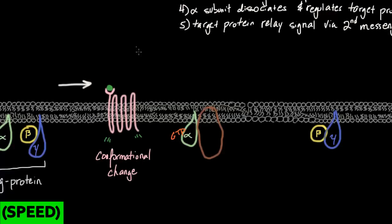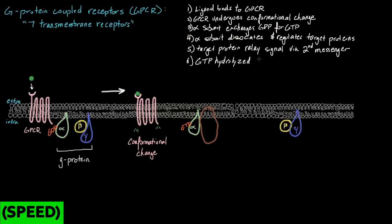Now, how can we actually make this thing go back to normal? Well, step six is that our GTP is hydrolyzed to GDP. So our GTP loses a phosphate in hydrolysis and becomes GDP. Once this happens, everything goes back to normal, and the ligand will leave.